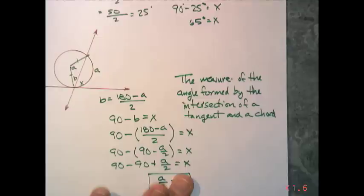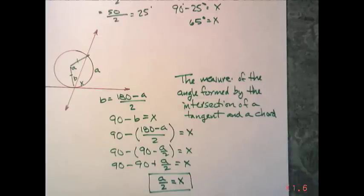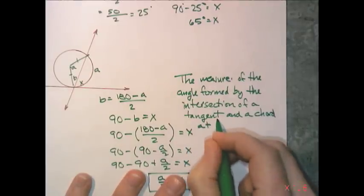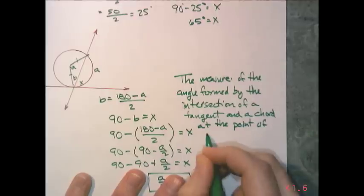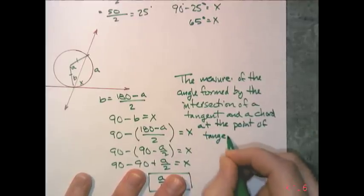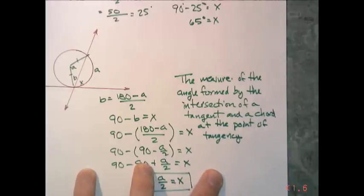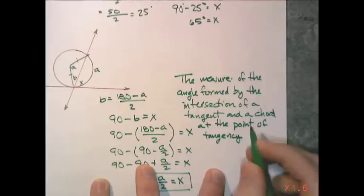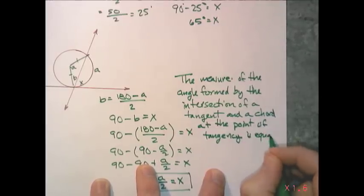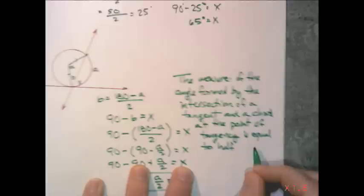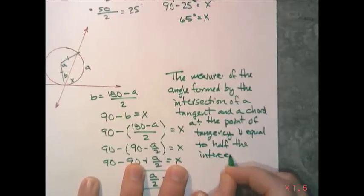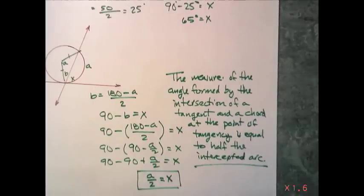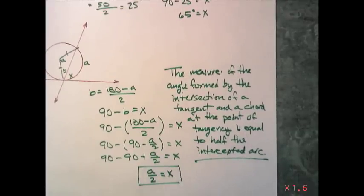The conjecture: the measure of the angle formed by the intersection of a tangent and a chord at the point of tangency is equal to half the intercepted arc. In other words, X is equal to half of A.